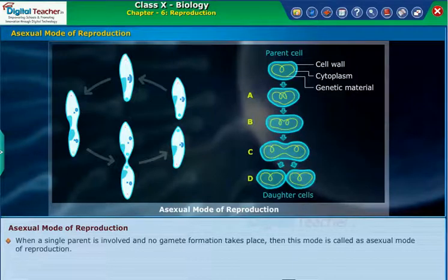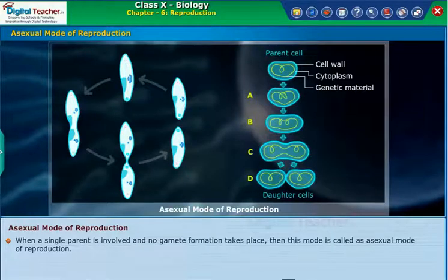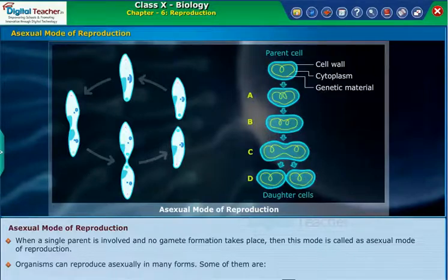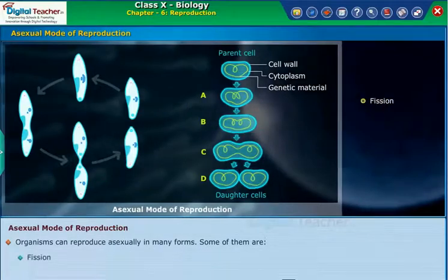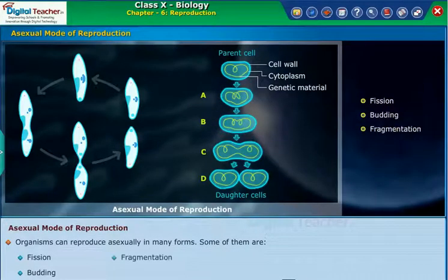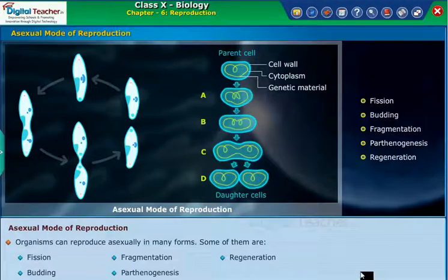When a single parent is involved and no gamete formation takes place, then this mode is called the asexual mode of reproduction. Organisms can reproduce asexually in many forms. Some of them are fission, budding, fragmentation, parthenogenesis, and regeneration. Let us learn each of them in detail.